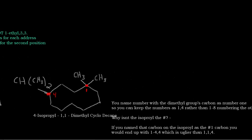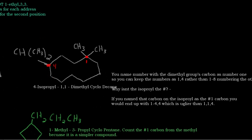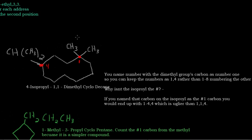Okay, and here's a more complex one. This is 4-isopropyl-1,1-dimethyl-cyclodecane. I'm using more complex models in this video so that you can really understand it. So you name the number with the dimethyl groups carbon as number 1, so you can keep the number as 1,4 rather than 1,8 if you number in the other direction. So you definitely want to keep those numbers smaller for each position.